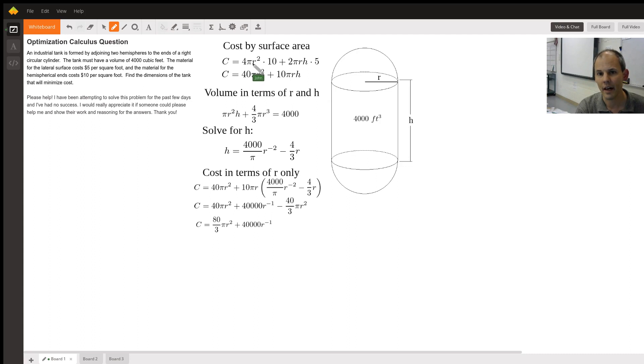So here is the surface area of the hemispheres, 4πr². Two hemispheres, of course, make one whole sphere. We can consider it that way. Multiply that by 10, that gives me 40πr². That's how much the material is going to cost for the hemispheres.